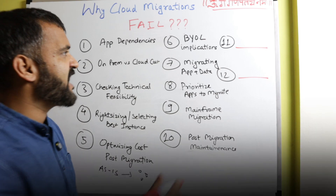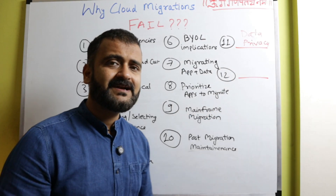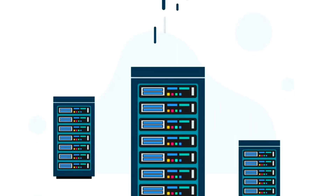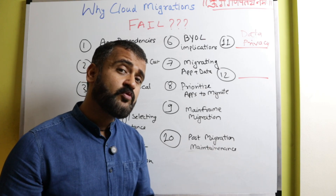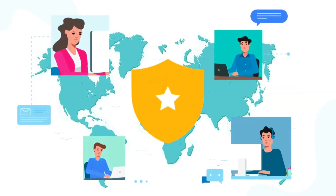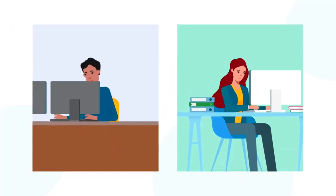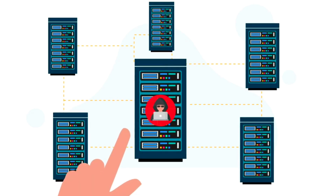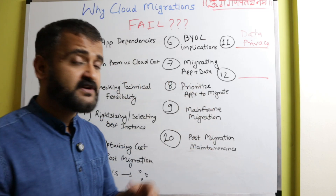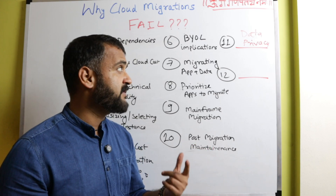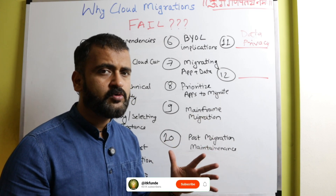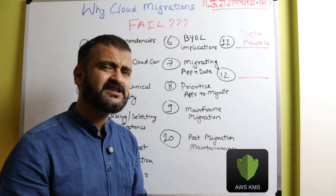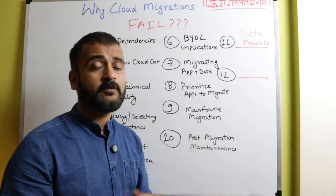At eleventh place, we have data privacy. Whatever we are moving to the cloud, we assume it is secure, but there are risks — there are hackers trying to penetrate and get this data. If you are not ensuring proper encryption, proper security mechanisms, and identity and access management, you are in for big trouble. Your migration might be successful, but what will happen if a cyber attack occurs and all your customer data gets stolen? That's why data privacy, when not tackled correctly, can have a huge impact. You have to use tools like KMS — Key Management Service — from AWS and other cybersecurity tools from different cloud providers to ensure your data is protected.